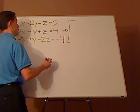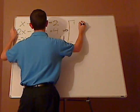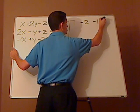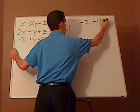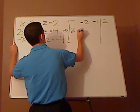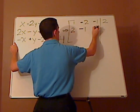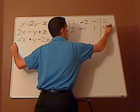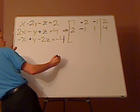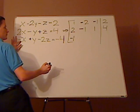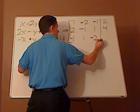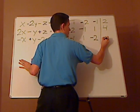So for the first equation you have 1, negative 2, negative 1, then 2. For your second equation you have 2, negative 1, positive 1, then 4. And the third row: negative 1, positive 1, negative 2, and then negative 4.